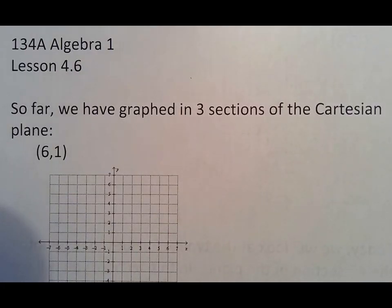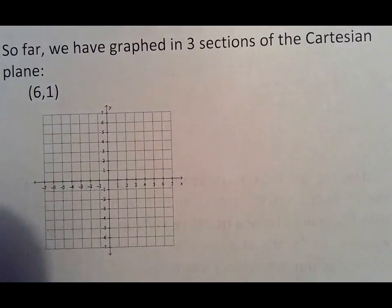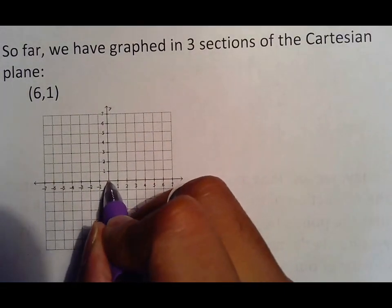So far in lesson 4.6 we have graphed three sections of the Cartesian plane. You'll notice that there are four sections in this graph. Your 0,0 in the official Cartesian plane is in the center.